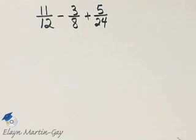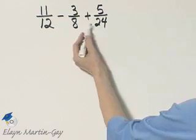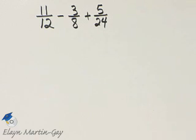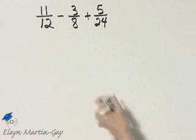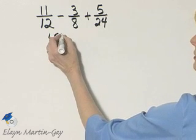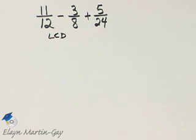Let's simplify this expression. We have subtraction and addition of fractions, so we need to have common denominators. What would be the least common denominator of denominators 12, 8, and 24?